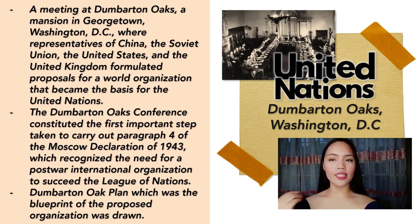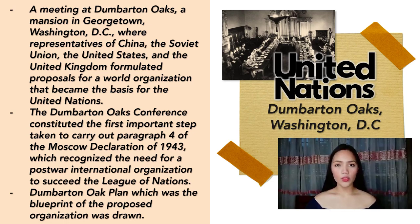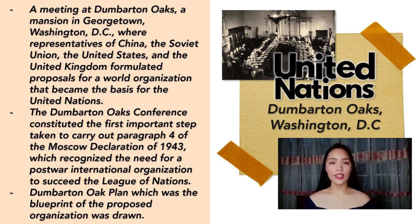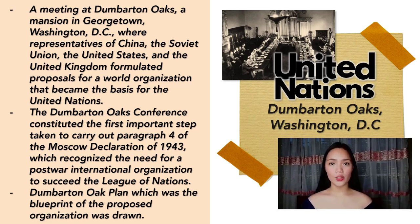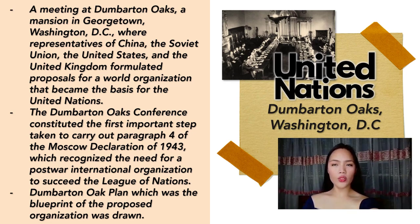Moreover, Europe and Pacific heads of states, diplomats, generals, and government officials met several times with the goal of creating another international organization to keep the peace — that is the Dumbarton Oaks Conference. The Dumbarton Oaks Conference in 1944 was held in a mansion in Georgetown, Washington, D.C., where representatives of China, Soviet Union, the United States, and the United Kingdom formulated proposals for a world organization that became the basis for the United Nations. However, the Dumbarton Oaks proposals failed to provide agreement on crucial questions such as the voting system of the proposed Security Council and membership provisions for the Soviet Union.